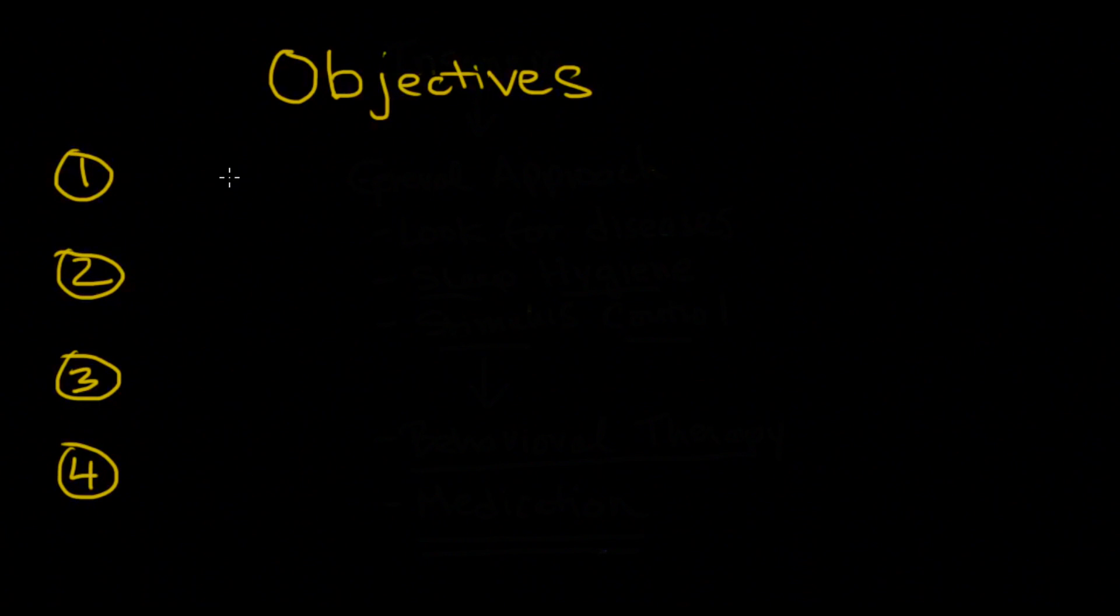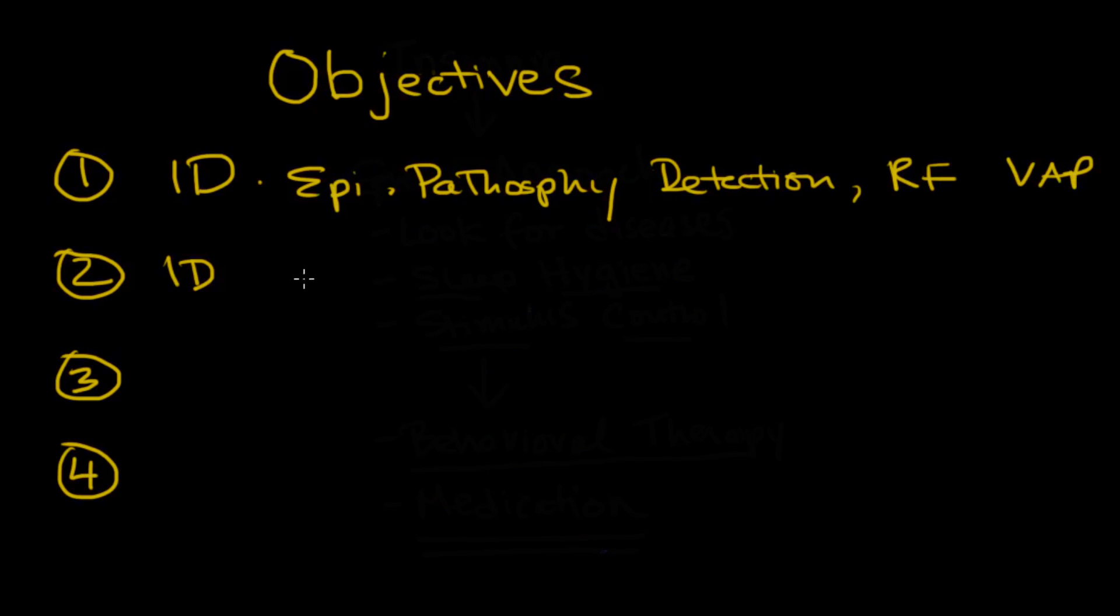The first objective is that we're going to identify the epidemiology, the pathophysiology, detection, and the risk factors for VAP. Number two is we're going to identify the risk reduction strategies. Number three, we're going to identify the pitfalls of implementation. And then finally, for number four, we're going to identify the areas of controversy.